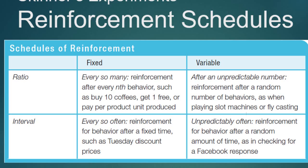So ratio means number — fixed means definite, variable means unpredictable. Now, interval means time. A fixed interval means reinforcement happens after a set period of time. For example, a Tuesday discount at a store means people are reinforced to go shop on that specific Tuesday — because it's every Tuesday, it's fixed.